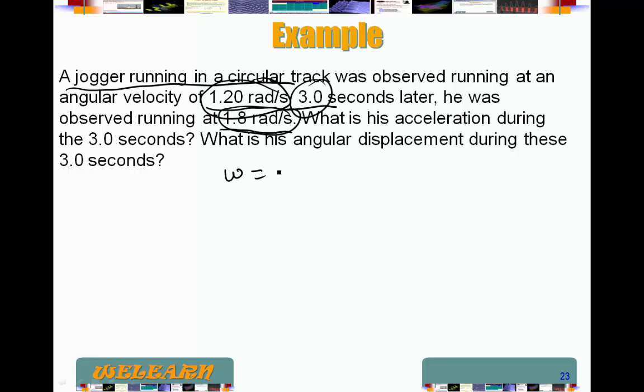Omega is equal to omega zero plus alpha t. So omega zero is my initial omega, which is 1.8 radians per second in this case. Alpha is what we are looking for. t is 3 seconds.